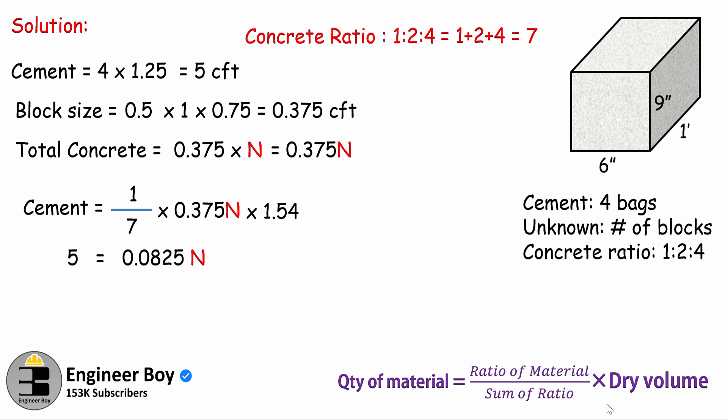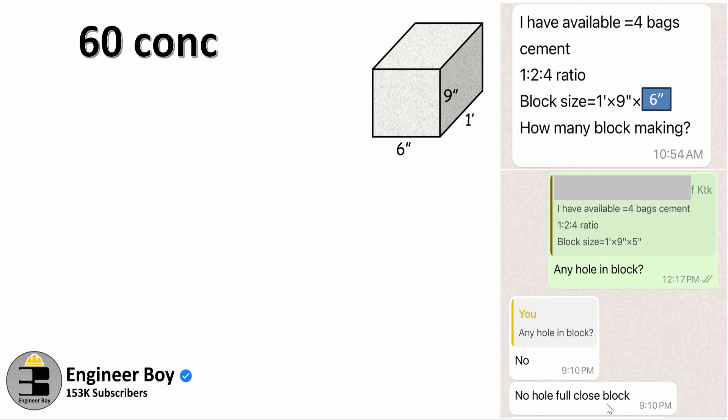Let's just divide both sides by 0.0825 so we can have the number of blocks, the value for N, alphabet N. So N equals 60.6 blocks. It means 60 concrete blocks can be molded with four cement bags.